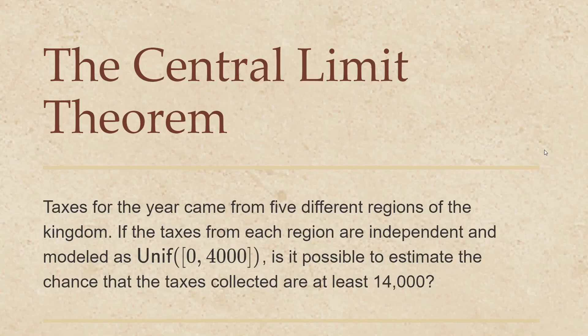Taxes for the year came from five different regions of the kingdom. If the taxes from each region are independent and modeled as uniform on the interval from 0 to 4,000, is it possible to estimate the chances that the taxes collected are at least 14,000?